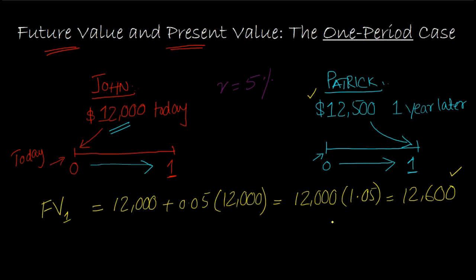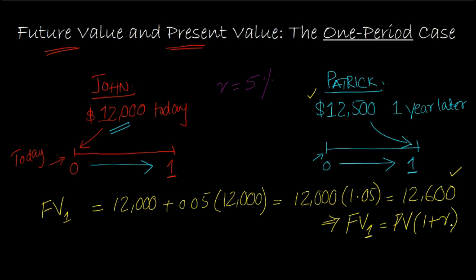More generally, we can write that the future value one year from now — this is what the one-period case is about — is: FV₁ = PV × (1 + r), where PV is the present value (the amount you have today, like $12,000) and r is the interest rate. In some textbooks you'll see a small 'i' instead of 'r' — 'i' stands for interest, 'r' stands for rate. It's just a difference in terminology; the main idea is the same.